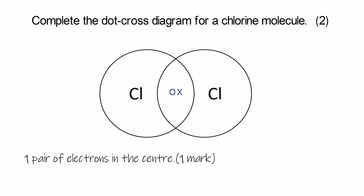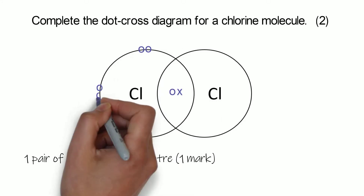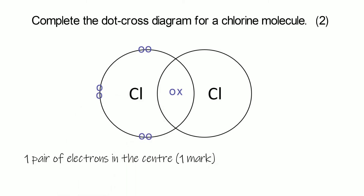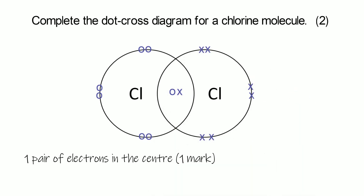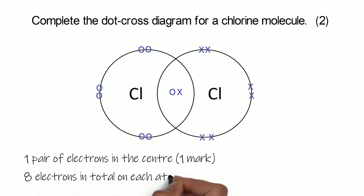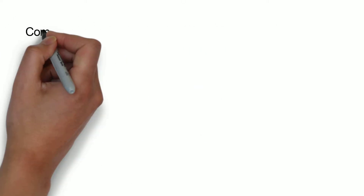That's one shared pair of electrons in the centre — it's like both atoms own those electrons. That gets your first mark for drawing those electrons. Now we need to make sure both atoms have a full outer shell, which means eight electrons. They both have two in the middle, so we just add an extra six to each atom. Now both atoms have full outer shells of eight, and that gives us our second mark. The first mark comes from the right number of bonds in the centre; the second mark from ensuring a full outer shell.